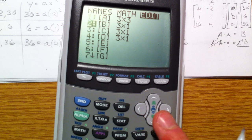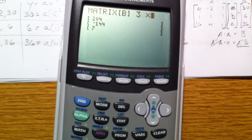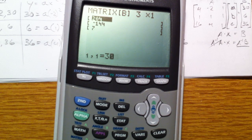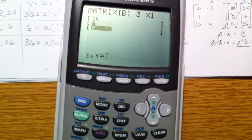And next matrix, I'm going to make it matrix B, a 3 by 1, and that's going to be our 30, our 6, and our 36.